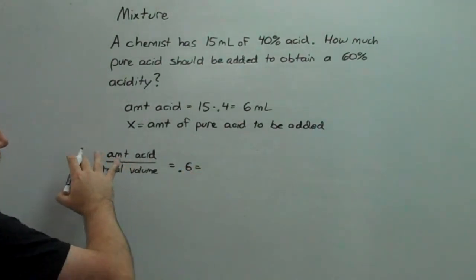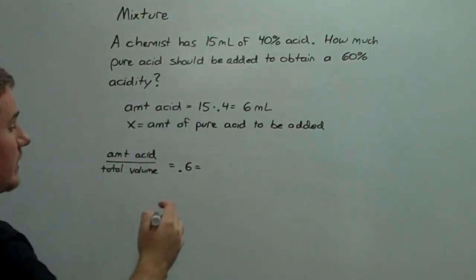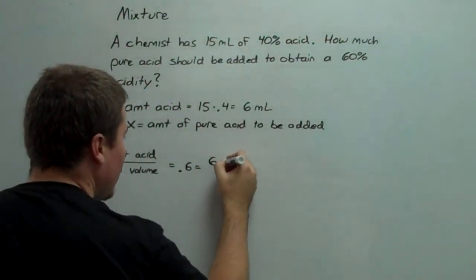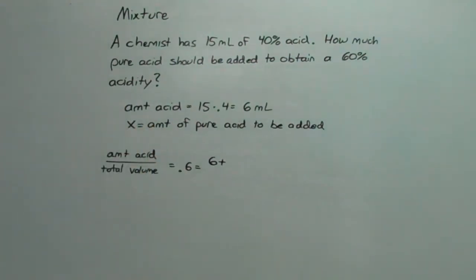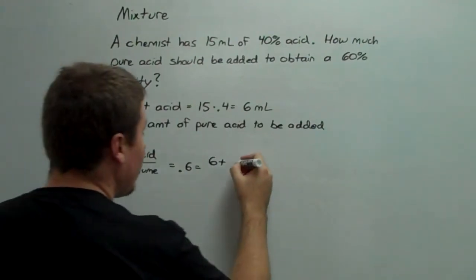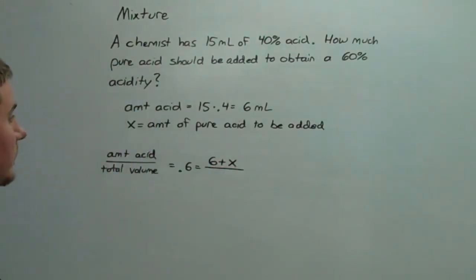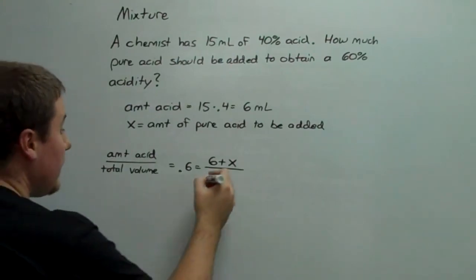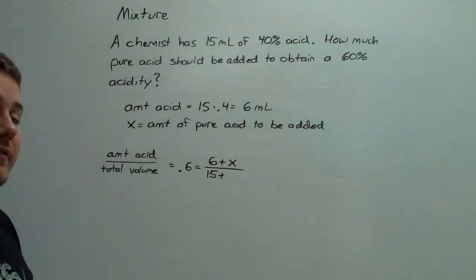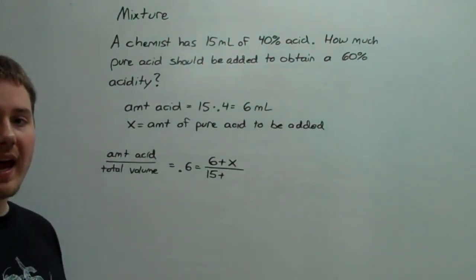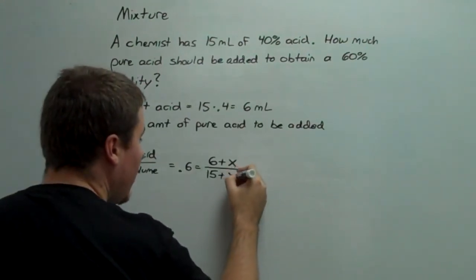So, let's write a line stating the amounts of acid. Well, we start out with 6 milliliters, but we then add x quantity of pure acid. So, 6 plus x. Now, in terms of total volume, we start out with 15 milliliters. And then, since every milliliter of pure acid we add is going into our total volume, we have to add that to the bottom as well.